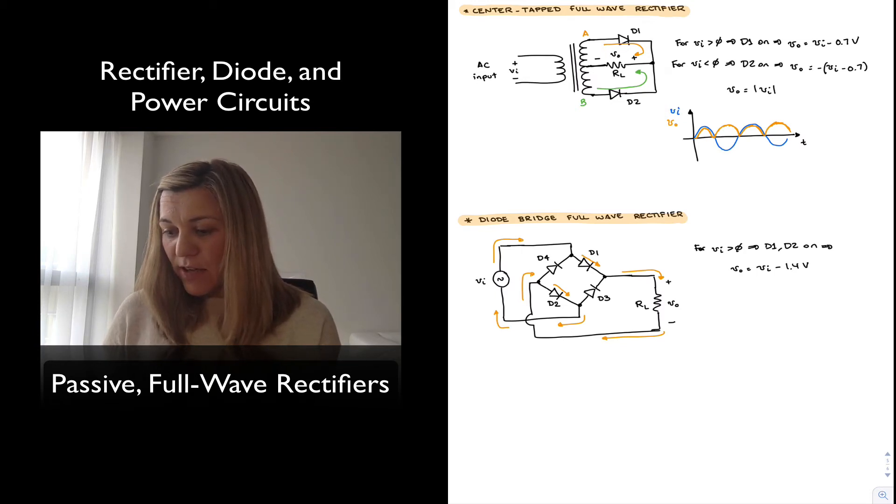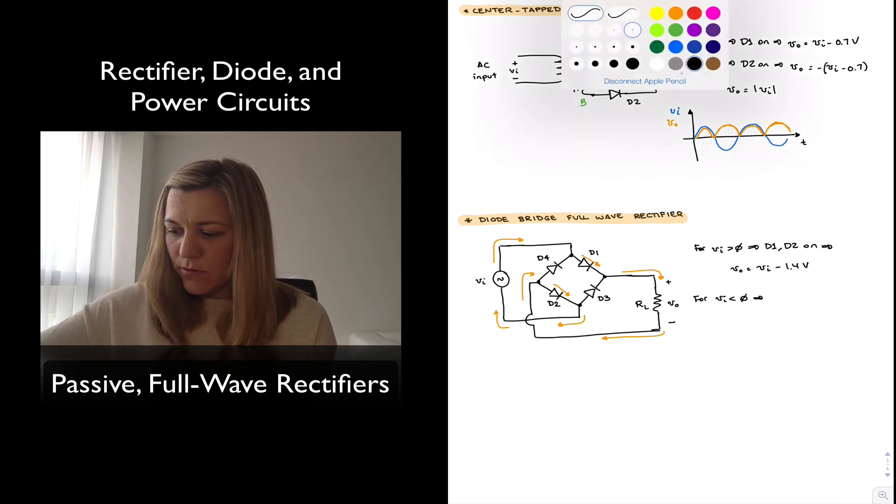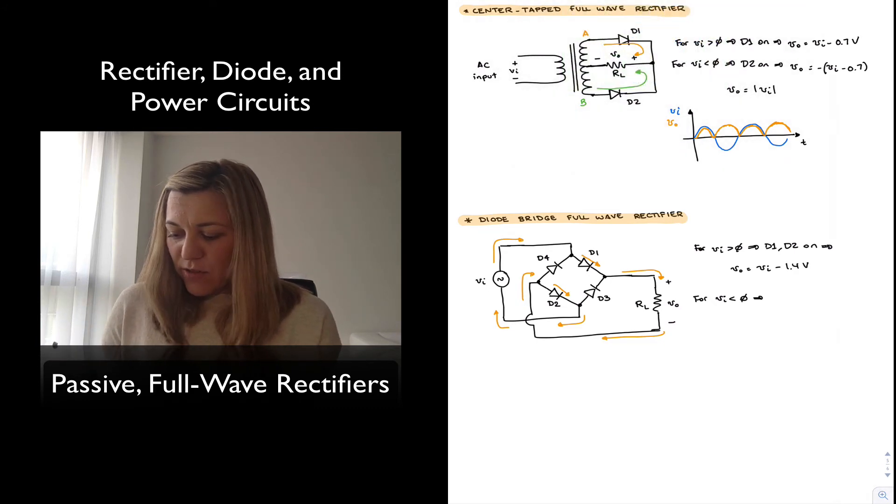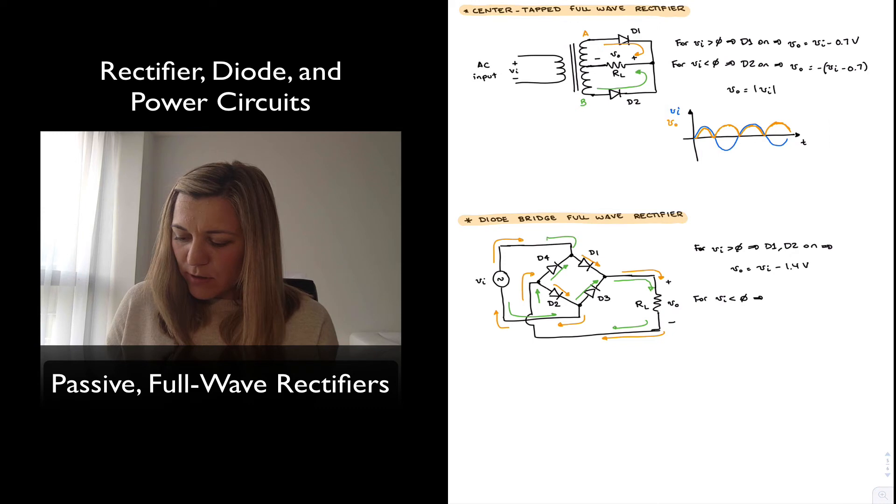Whereas during the negative half cycle, v_in less than zero, we have that the current is flowing in the opposite direction. It will flow through diode D3. Notice that it again will flow through the resistor in the same direction as during the positive half cycle, so the voltage that develops is with the same polarity as before. And then it's going to go back, except in this case it's going to take the route through D4 and come back that way.